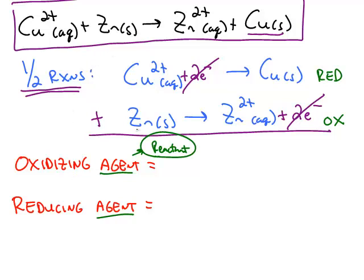In this reaction, we know zinc was oxidized. Zinc is not the oxidizing agent. What caused zinc to be oxidized was the copper 2 plus. And what caused the copper 2 plus to be reduced was the presence of the zinc.